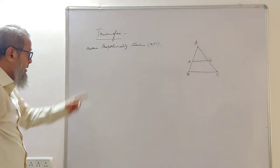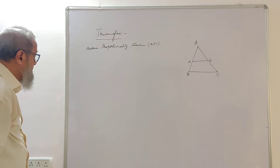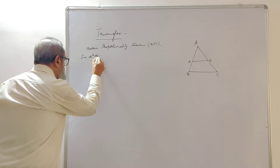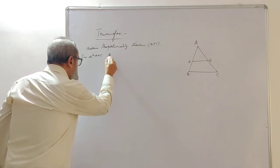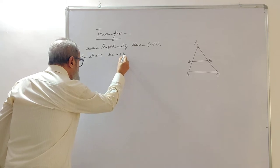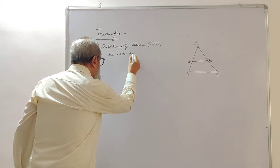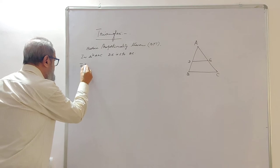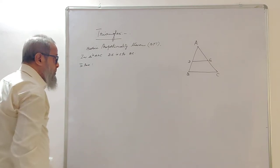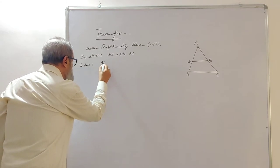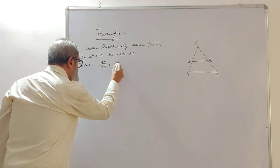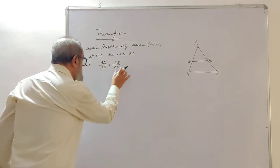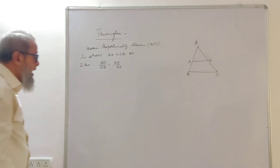Now I have taken triangle ABC. In triangle ABC, DE is parallel to BC. Now we have to prove that AD by DB is equal to AE by EC. This is what is to be proved.